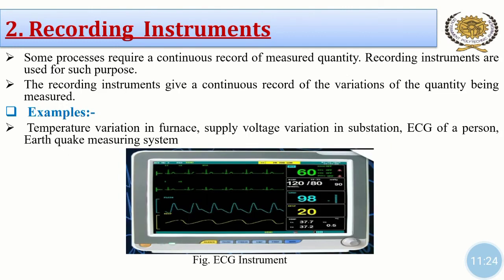The second type is recording instruments. Some processes require a continuous record of a measured quantity, and recording instruments are used for such purposes. These instruments give a continuous record of the variations of the quantity being measured. For example, temperature variation in a furnace, supply voltage variation in a substation, ECG of a person, and earthquake measuring systems. The figure shows an ECG instrument, which is a recording instrument in which continuous recording takes place.